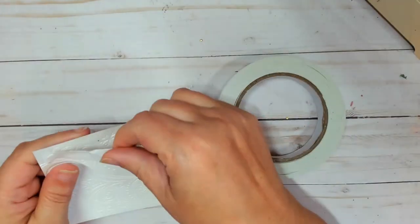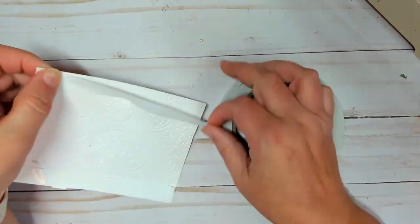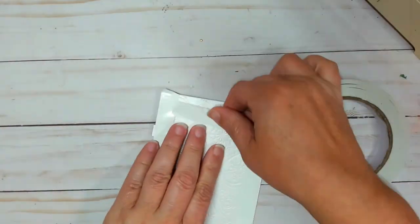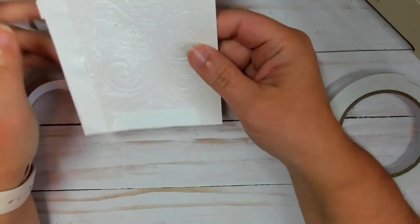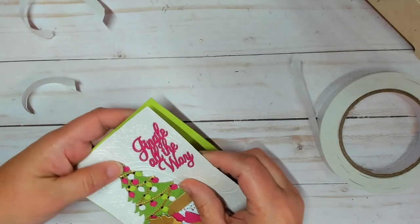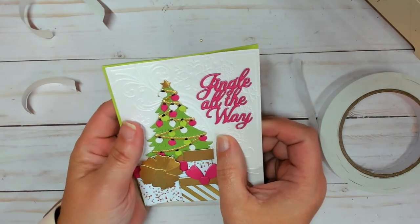Once this mat was put together, I went ahead and put some double sided adhesive on the backing and adhered it to a 4 1/4 by 5 1/2 A2 card base. I think this card turned out so adorable.